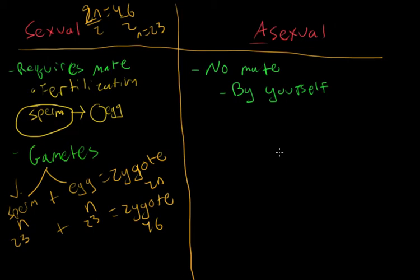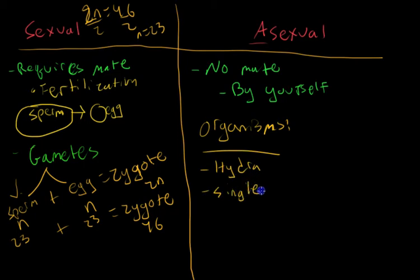Asexual reproduction still uses cell division. It still has to divide cells. And most commonly, you'll see organisms that do this are more single-celled. So single-celled eukaryotic organisms, such as paramecium. And then even multicellular eukaryotics, like hydra. Basically, those are the organisms that undergo asexual. They're more simplistic organisms, so they can undergo asexual reproduction.